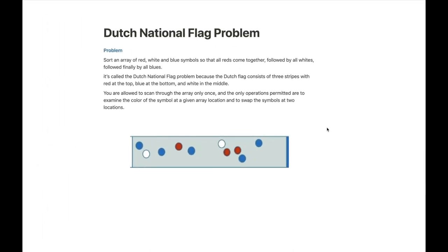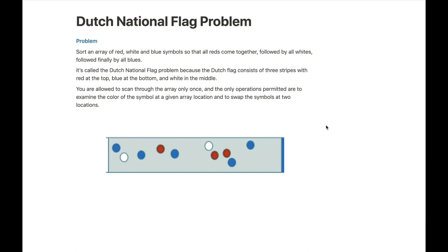I'm going to talk about this problem called the Dutch National Flag problem. It's a partitioning problem, and it also relates to sorting, especially the quicksort partition part. The problem is essentially that we have an array — or maybe just a set of pebbles or balls — and they are of colors red, white, and blue. What we want is to sort them so that all the reds come together first, followed by whites, and then followed by blues.